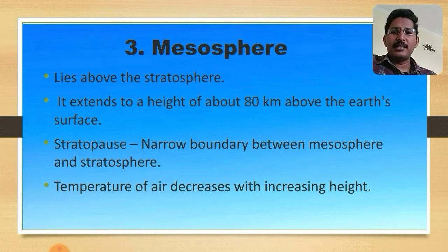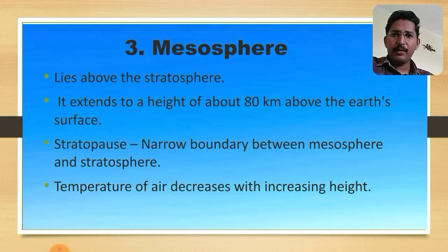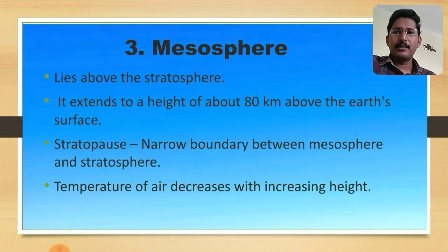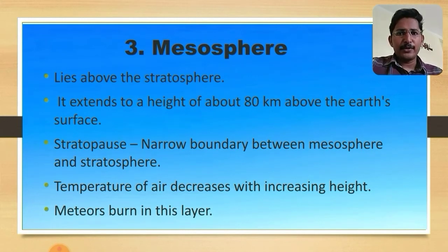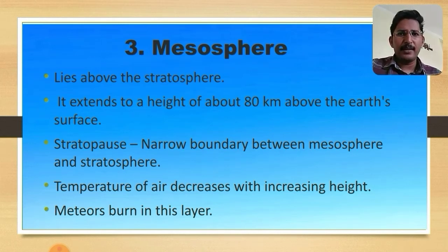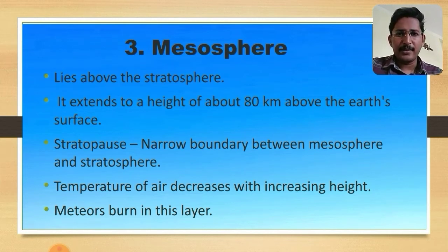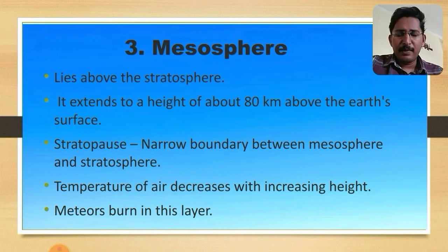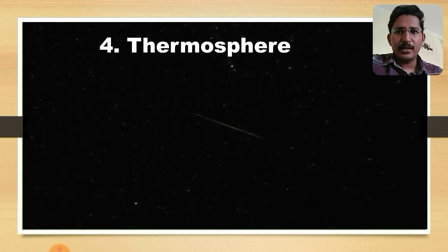In the mesosphere, temperature decreases with increasing height. Most importantly, meteors — broken particles that revolve around the Sun — burn up when they enter the mesosphere. We observe this phenomenon as shooting stars at night. Without the mesosphere burning up these meteors, it would be harmful for the Earth.